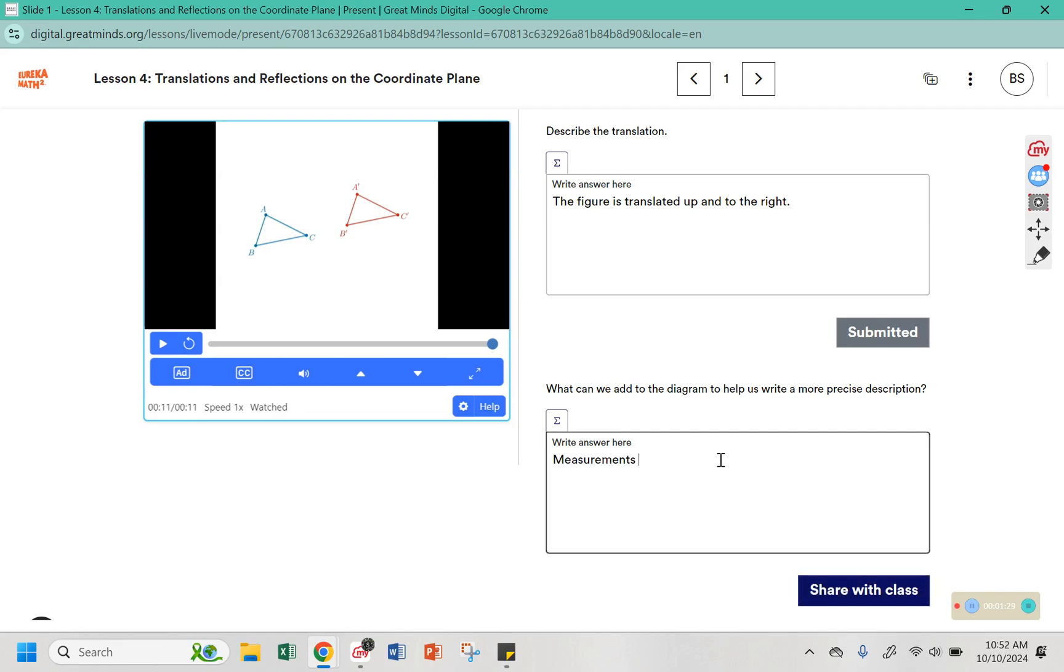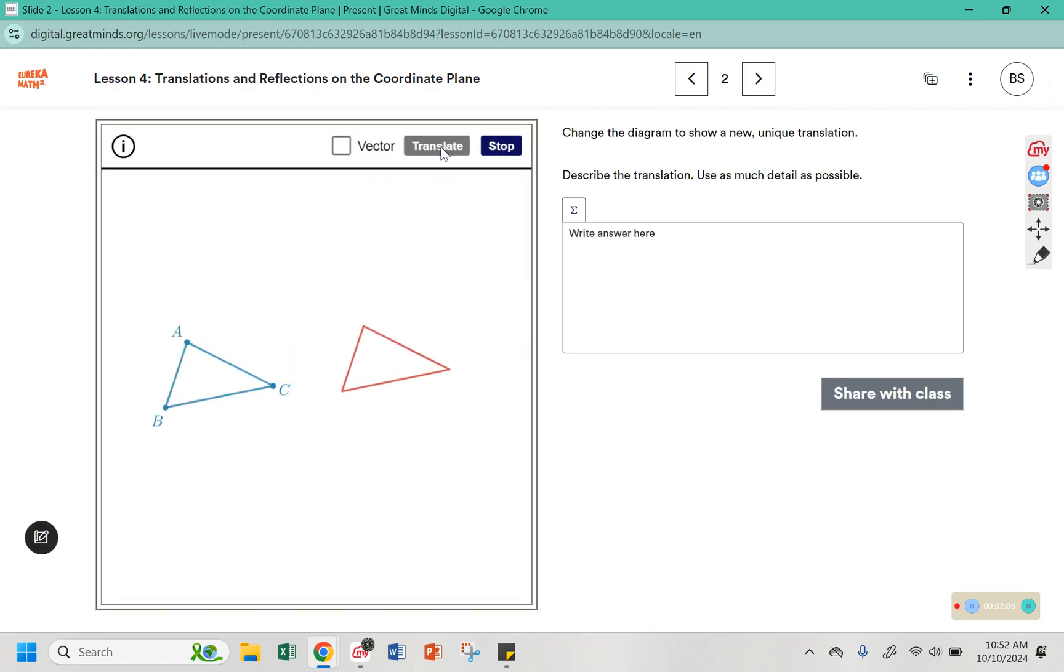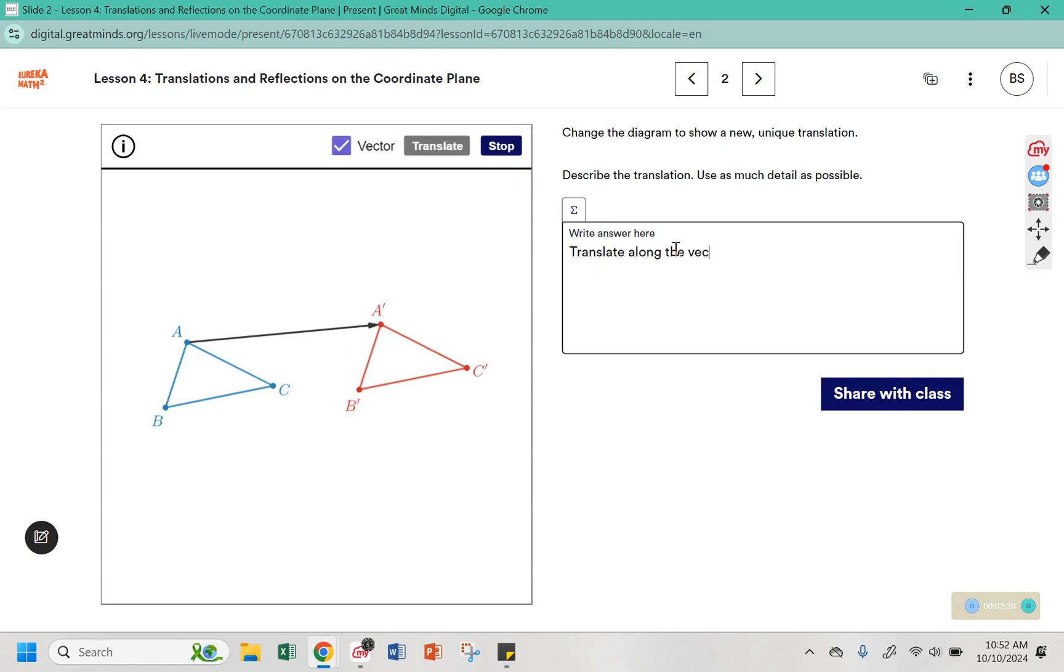What can we add to the diagram to help us write a more precise description? We could add measurements, which would help us figure out how far it is in that picture. If these are mile-long triangles, then our answer for how far to move it would be different than if they were only a few centimeters across. We could also add a vector to describe the way that it needs to move or the direction that it needs to move, or perhaps a grid. So here it says translate, describe the translation, and use as much detail as possible. We can translate along the vector from a to a prime. We can call that vector a a prime.